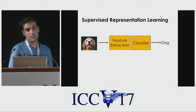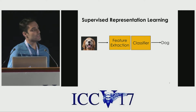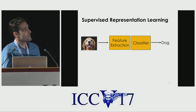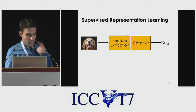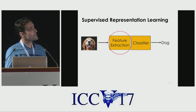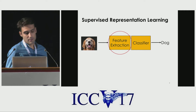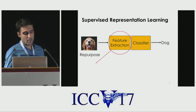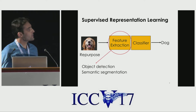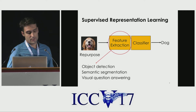To learn visual representations in a supervised setting, we can train a convolutional neural network that takes an image as input and predicts some annotations like category label as output. By training on lots of labeled data, the network builds a hierarchical representation that can be repurposed on other datasets and tasks like object detection, semantic segmentation, visual question answering, and so on.